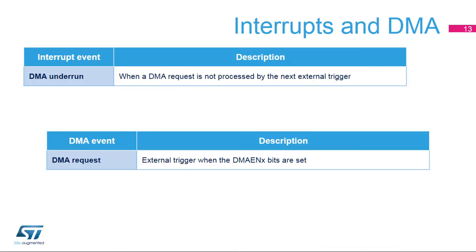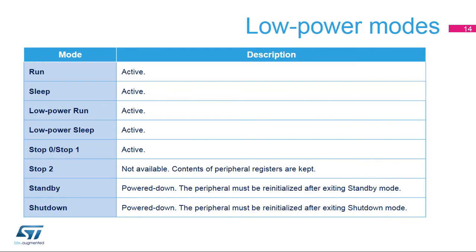The DAC can generate a DMA underrun interrupt. To transfer data from memory, a DMA request can be generated. The digital-to-analog converter is active in the following low-power modes: Run, Sleep, Low-Power-Run, Low-Power-Sleep, Stop-0, and Stop-1. In Stop-2 mode, the DAC is not available, but the content of its registers is kept.